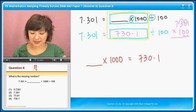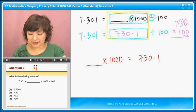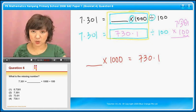So I have to divide it. I have to take 730.1 divided by 1,000. So I shift the decimal towards my left.